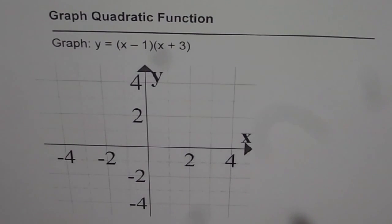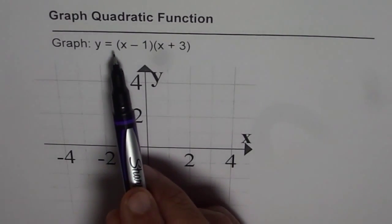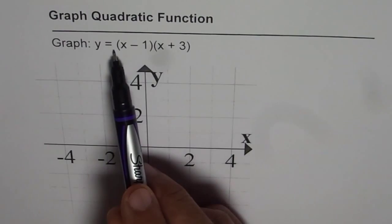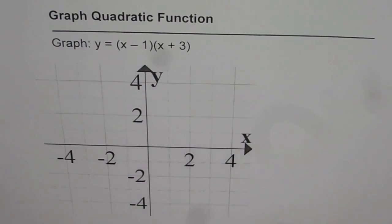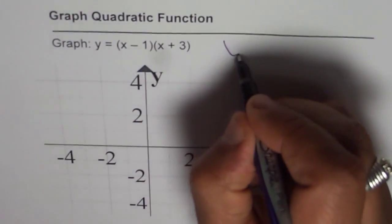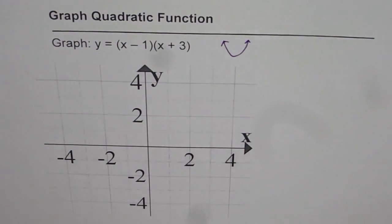As you know, the graph of a quadratic function should be a parabola. From the given equation, it seems that a, the leading coefficient, is 1, and therefore the graph should open upward. So we are expecting a graph like this for the given equation.